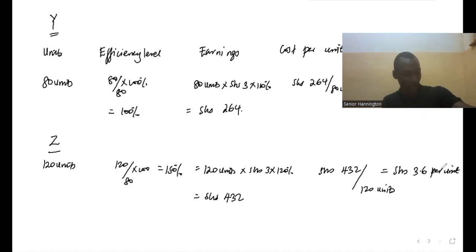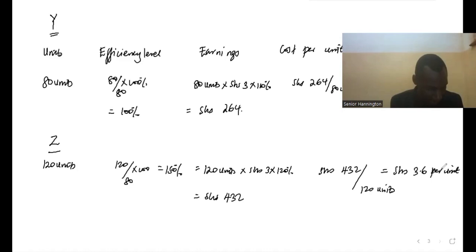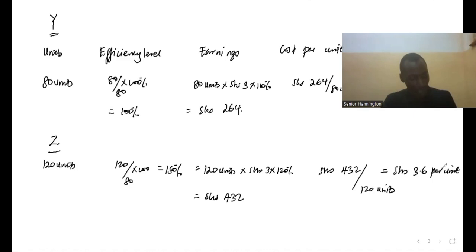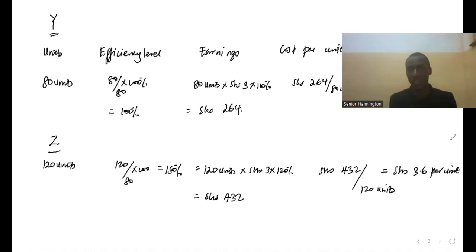In this video we have seen how to calculate the earnings of workers using Merrick's differential piece rate system. Under this system, performance below standard is not penalized, and workers are paid according to their efficiency levels — the higher the efficiency level, the greater the earnings. In the next presentation we will discuss the Gantt task bonus system. Thank you for watching.